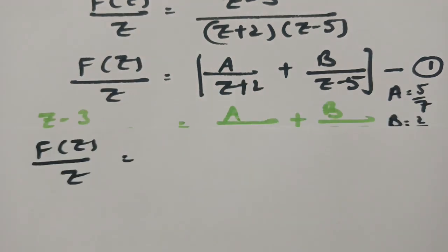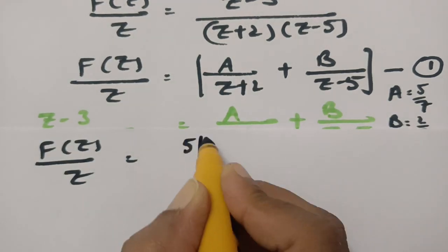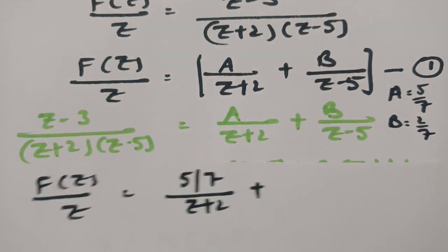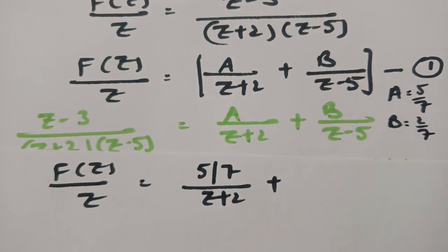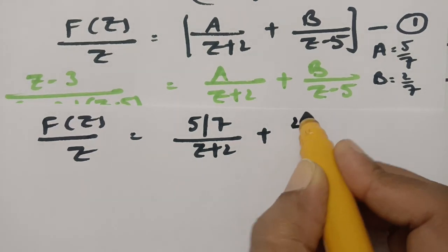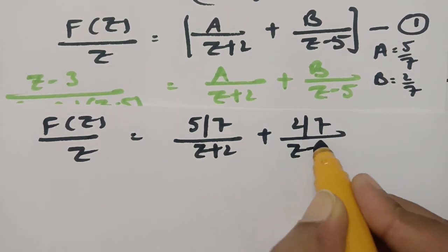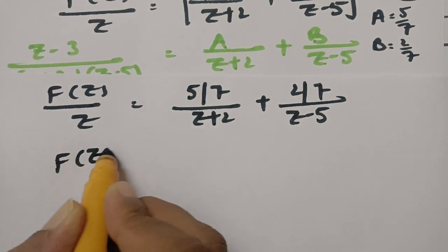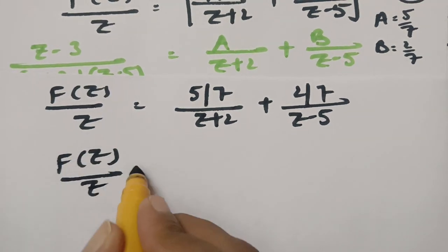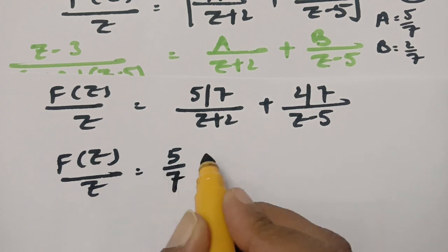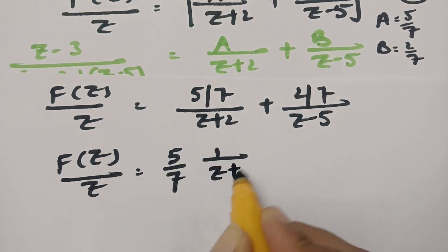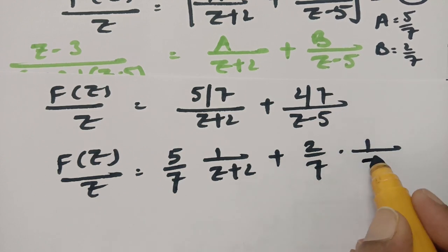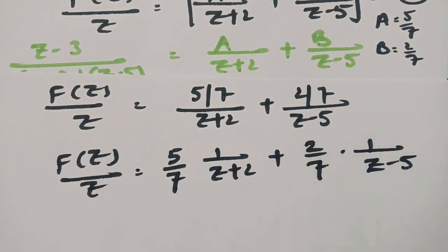F of Z by Z can be written as 5 by 7 times 1 by Z plus 2 plus 2 by 7 times 1 by Z minus 5.